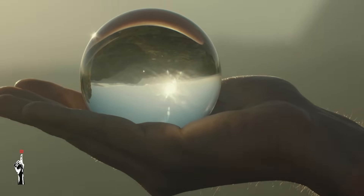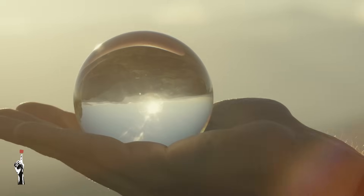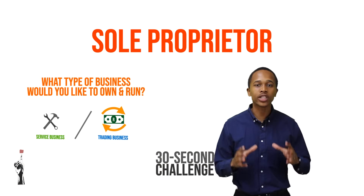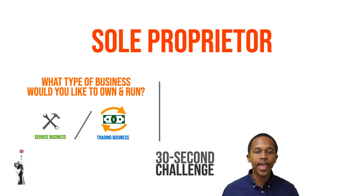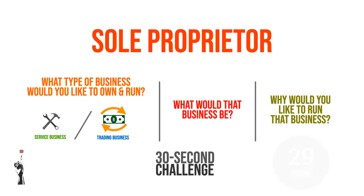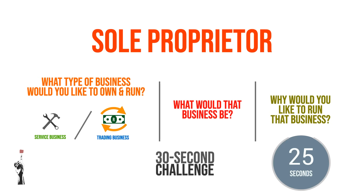Pair up with the person next to you if you're in class, or if you're alone, write this down. In 30 seconds, write down what type of business you'd like to run as a sole proprietor, what that business would be, and why you'd like to run that business.